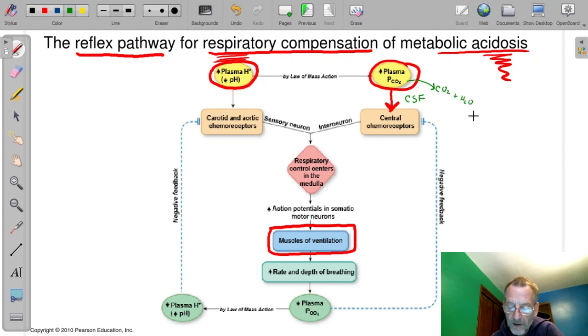It combines with water, right? And that formed carbonic acid. And then that dissociated into hydrogen ions and bicarbonate. And it's that little tiny hydrogen that I drew, it binds to the central chemoreceptors, and then that stimulated the respiratory control centers in the medulla.